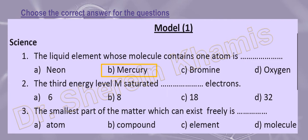The last one is the triatomic element. We have only one element: ozone, which consists of three oxygen atoms. We call it a triatomic element. Let's go to question number two.